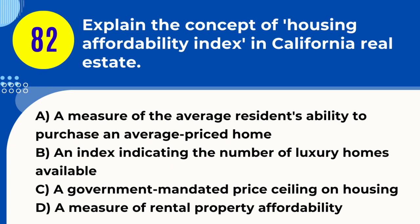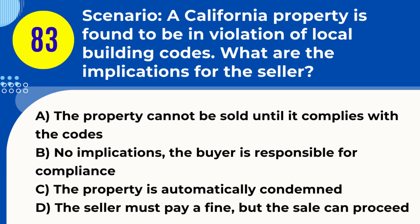Question 82. Explain the concept of housing affordability index in California real estate. A. A measure of the average resident's ability to purchase an average-priced home. B. An index indicating the number of luxury homes available. C. A government-mandated price ceiling on housing. D. A measure of rental property affordability. Answer: A. Explanation. The housing affordability index in California real estate is a measure used to gauge the average resident's ability to buy an average-priced home in a specific area. It considers factors like median household income, median home price, and prevailing mortgage rates. A higher index indicates greater affordability.